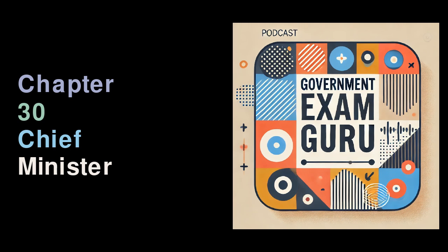However, according to Article 163, the governor exercises this power on the advice of the council of ministers, headed by the chief minister. This indicates that while the governor is the constitutional head, the real governing power lies with the chief minister and their team.